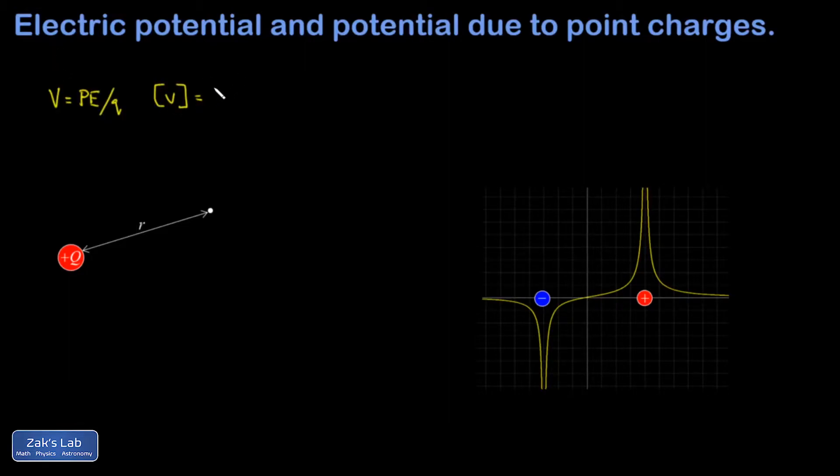I can see from the equation are joules per coulomb, but that gets a special name. That's a V for volts.